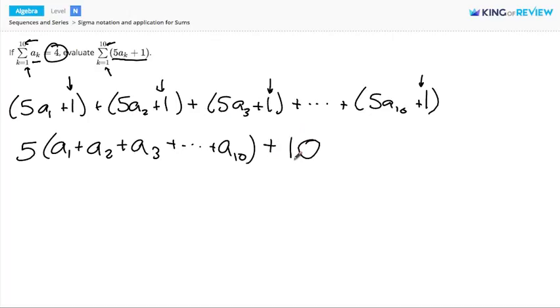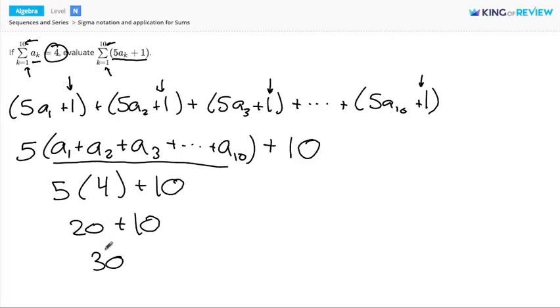But now we can figure out what this is. As I mentioned, we know the sum of a1 up through a10 is 4. So all we have to figure out is 5 times 4 plus 10, which is 20 plus 10, or 30. So using the original sum, we were able to rewrite the new sum in terms we could interpret as actual numbers and get 30 for our sum. Thanks for watching!